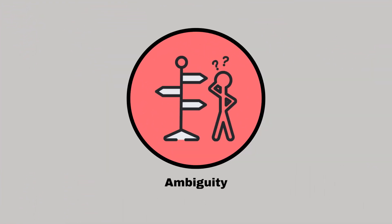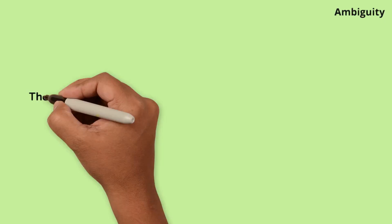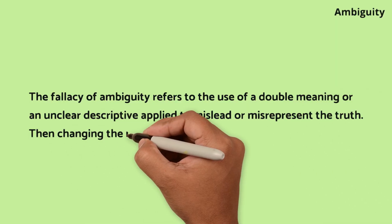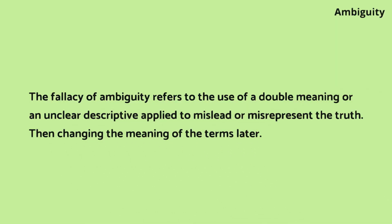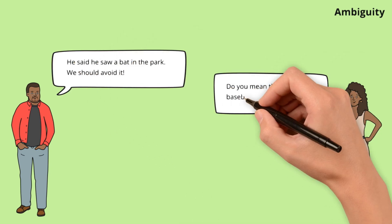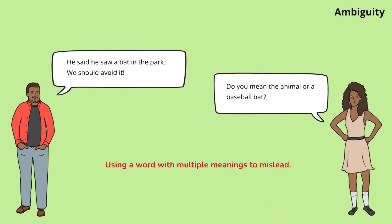Ambiguity. The fallacy of ambiguity refers to the use of a double meaning or an unclear descriptor applied to mislead or misrepresent the truth, then changing the meaning of the terms later. Oliver uses the word 'bat' ambiguously, leading to confusion. Laura clarifies, highlighting the need for precise language to avoid misunderstandings in conversations.